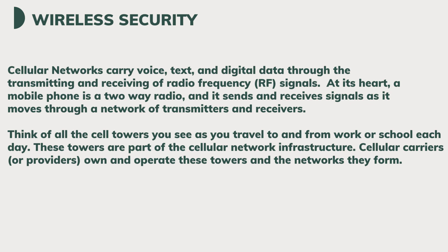Cellular networks carry voice, text, and digital data through the transmitting and receiving of radio frequency, or RF signals. At its heart, a mobile phone is a two-way radio, and it sends and receives signals as it moves through a network of transmitters and receivers. Think of all the cell towers you see as you travel to and from work or school each day.